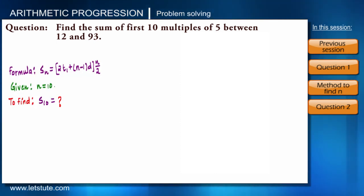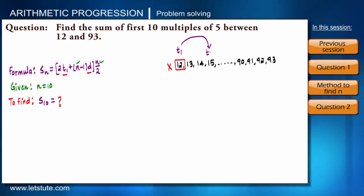So now we have to find T1 and d only. Rest two parameters. Okay, so list the numbers: 12, 13, 14, 15... 90, 91, 92, 93. T1 is not 12. T1 is 15 - first multiple of 5 in the range is 15. So we got T1 also.